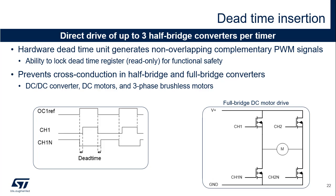A hardware dead-time generator provides two non-overlapping complementary PWMs from a reference PWM signal. The STM32 timers include up to three dead-time generators for OC1, OC2, and OC3 channels. The dead-time duration is programmed with an 8-bit value, which can be locked by the user to prevent corruption during runtime using a write-once lock bit that switches the dead-time register into read-only mode. Dead-time insertion is necessary when driving half-bridges where a pair of transistors are connected in series between two power rails, requiring a delay before switching on one side to allow the other side to switch off. Half-bridges are found in DC-DC converters or full-bridge motor drive topologies and three-phase inverters.